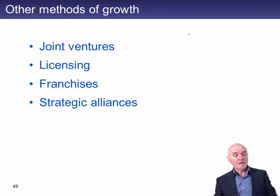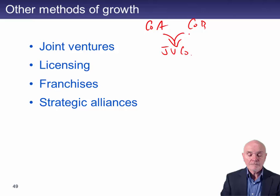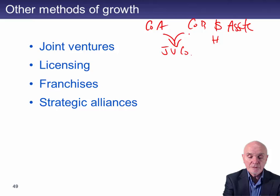Other methods of growth — first of all, joint ventures. A joint venture happens where you have Company A and Company B, and what they do is produce a joint venture company. Into this they put some capital, they may transfer assets, they may transfer human resources, and they may also transfer know-how.